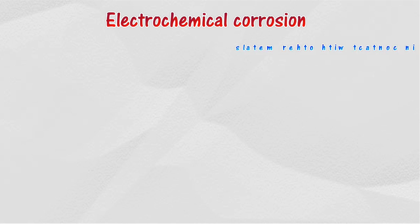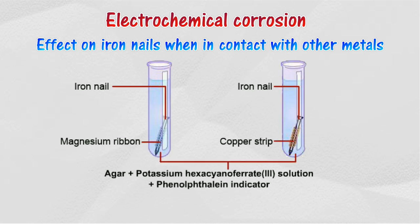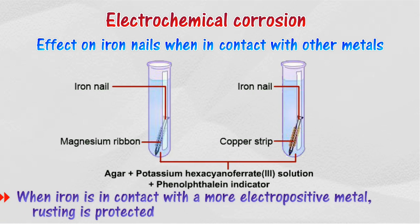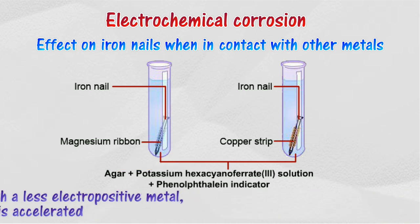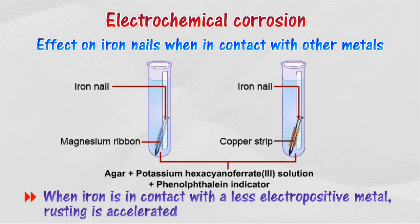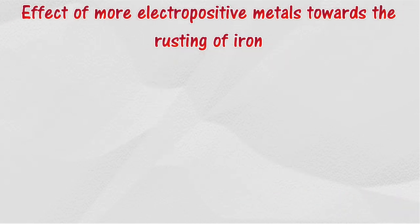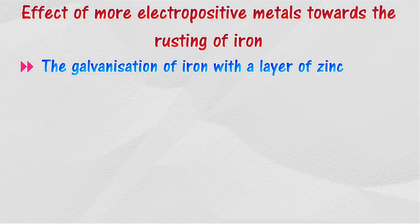On the other hand, the less electropositive metal is protected from corrosion. For example, in the rusting of iron: the rusting of iron can be prevented when iron is in contact with a more electropositive metal. Conversely, the rusting of iron can be accelerated when iron is in contact with a less electropositive metal.